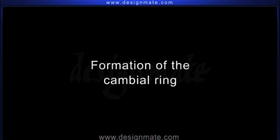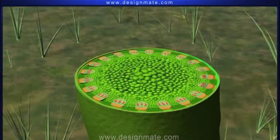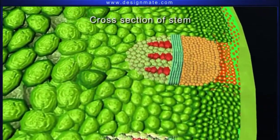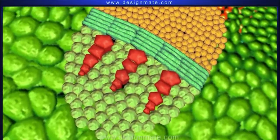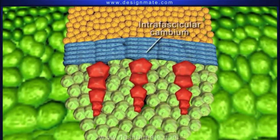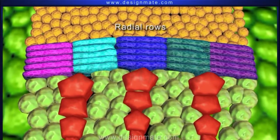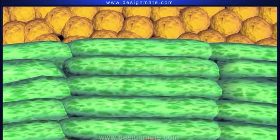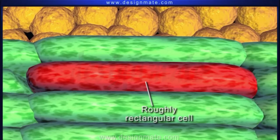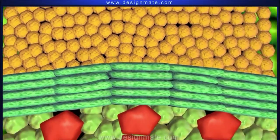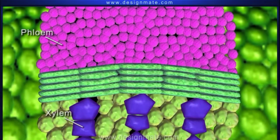Formation of the cambial ring. A cross-section of a young dicot stem shows that an intrafascicular cambium consisting of radial rows of thin-walled, roughly rectangular cells present in between the phloem and xylem tissue.